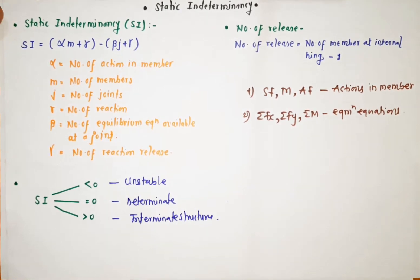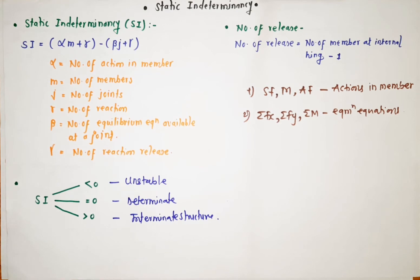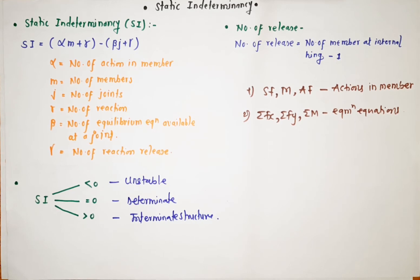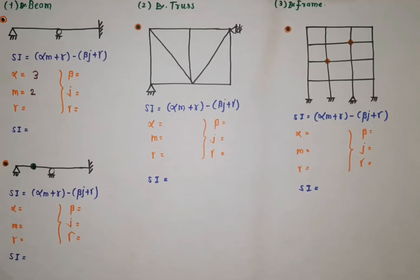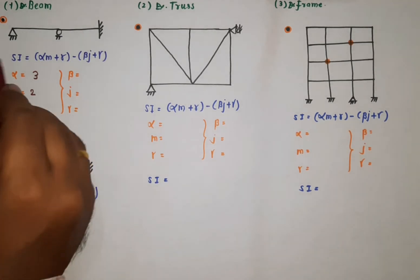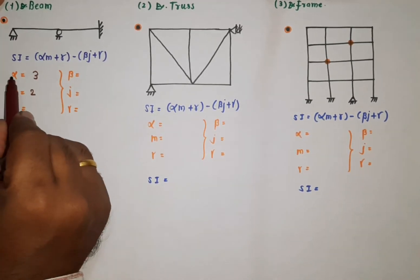So using the formula SI = αm + r - βj + γ, we can calculate static indeterminacy for beams, trusses, and frames. Let us consider the first problem — a beam.